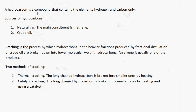You need to be able to explain what a hydrocarbon compound is. A hydrocarbon compound is a compound that contains the elements hydrogen and carbon only — hence the term hydrocarbon. There are various sources of hydrocarbons. We can get hydrocarbons from natural gas; the main constituent of natural gas is methane. And we can also get hydrocarbons from crude oil.